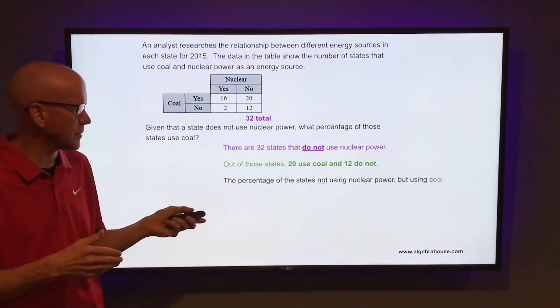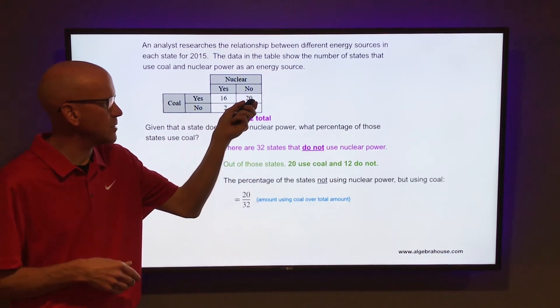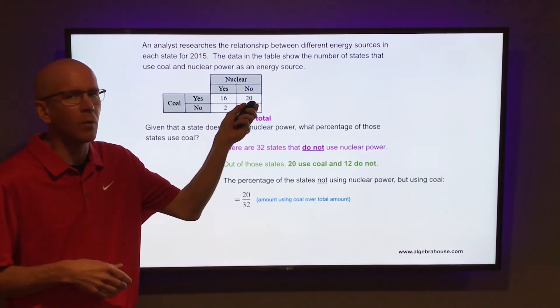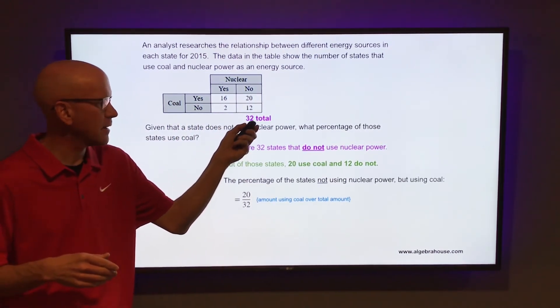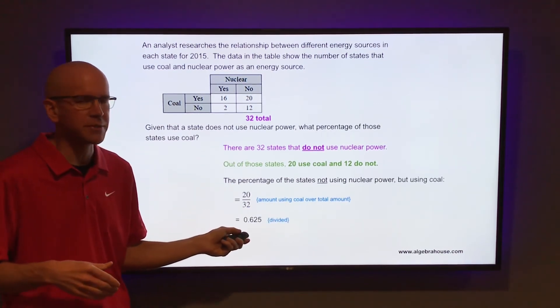So to get the percentage of the states not using nuclear power but using coal, 20 states do not use nuclear power but they do use coal out of the total states of 32. So take 20 out of 32. 20 divided by 32 is 0.625.